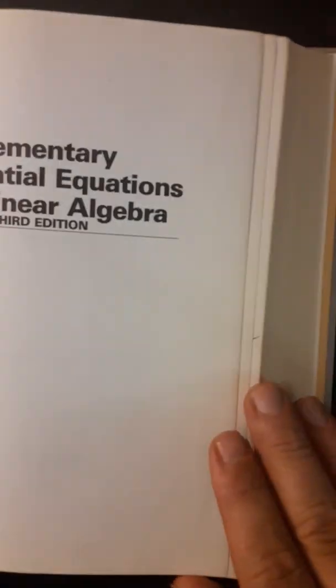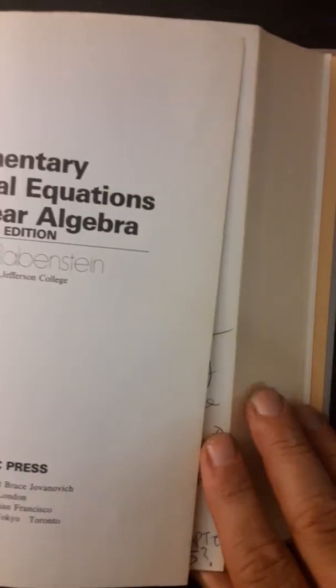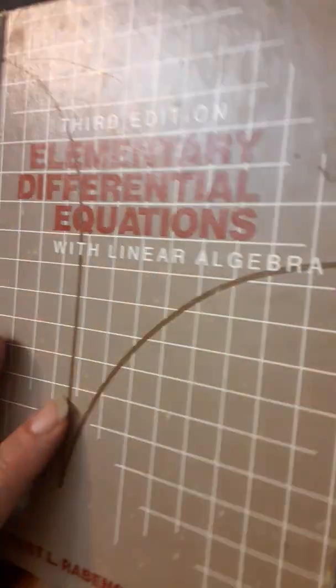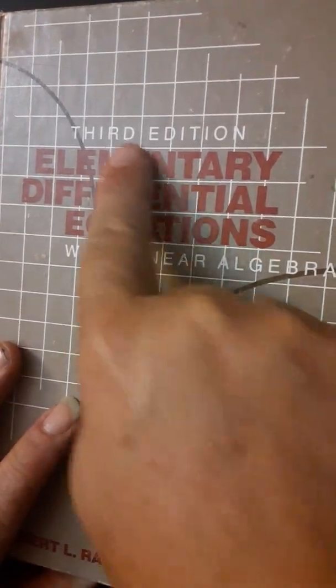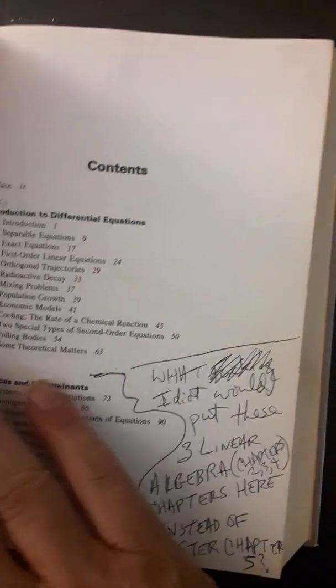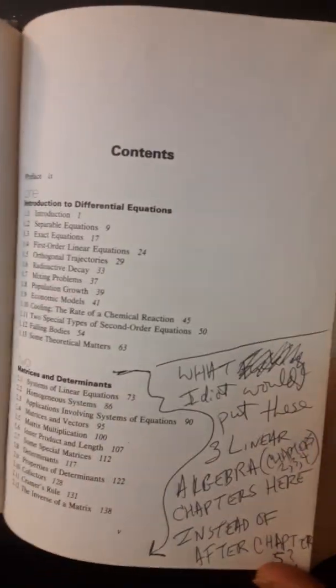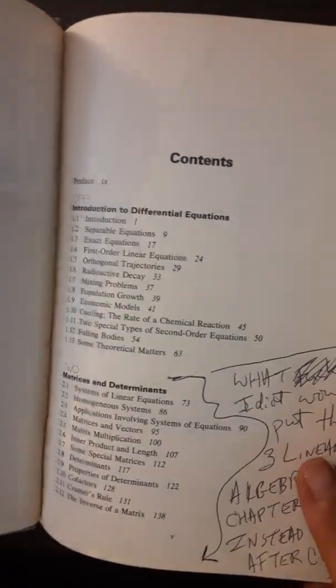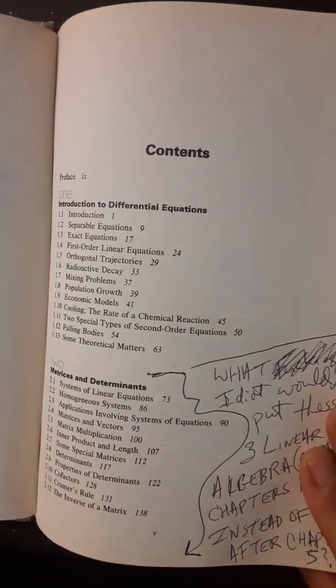So here's the book and let's take a look at why this is the worst differential equations book ever published. And by the way this is the third edition, so they had plenty of time to rectify their mistakes when they saw the number of students who probably dropped out of the classes when they happened to get this book.